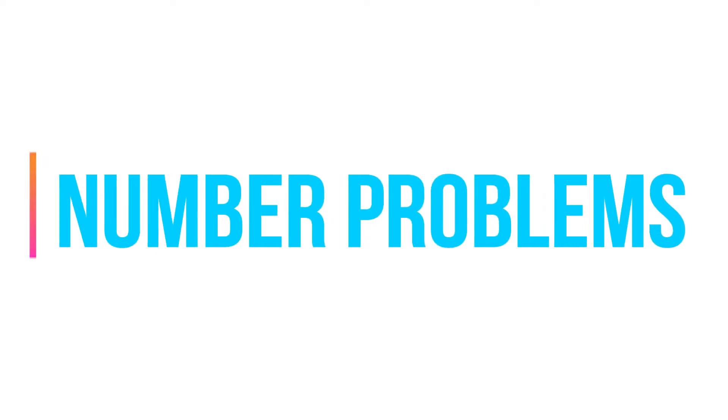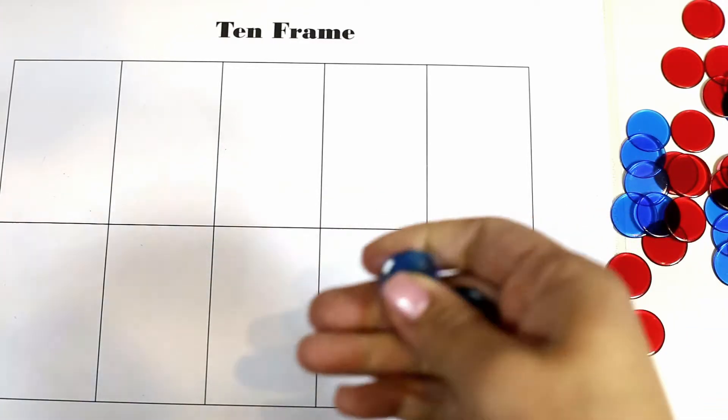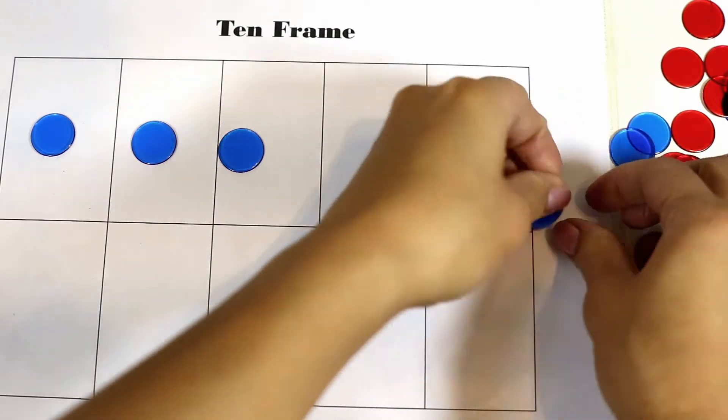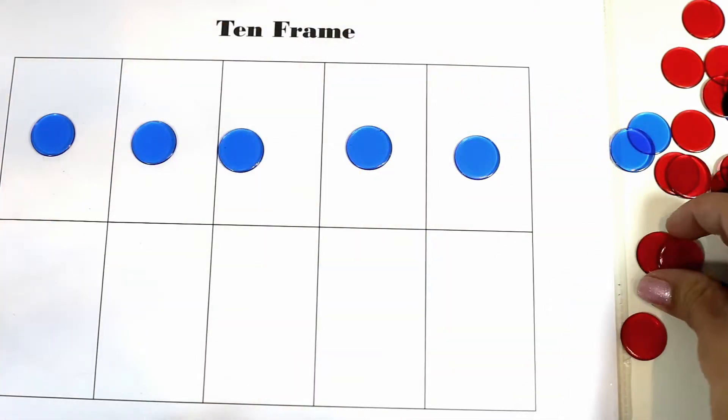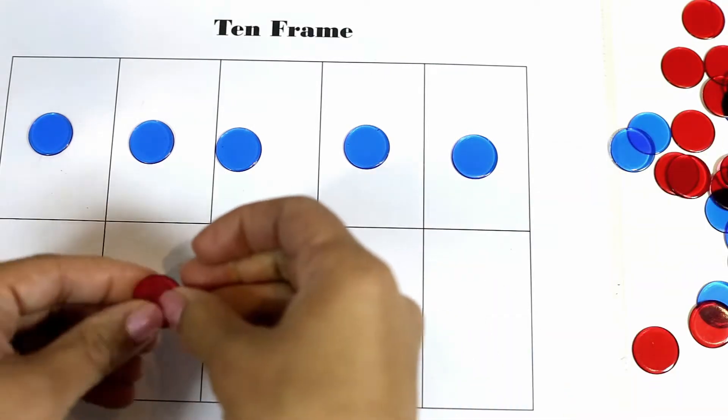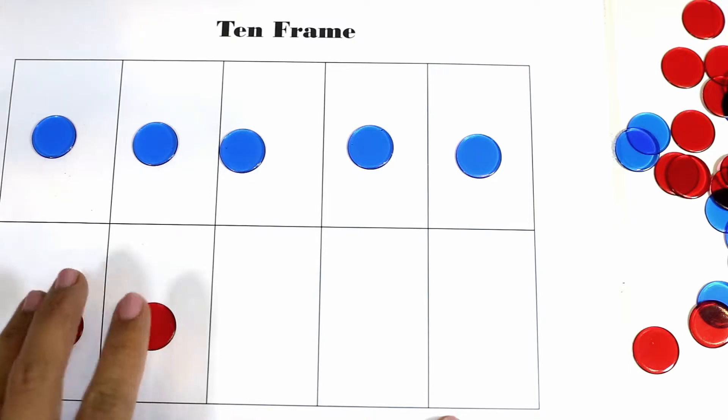The next activity is number problems. So I can give the student a number. So say I give them the number five and they put it at the top and then I would say five plus two and they would put the counters at the bottom. Five plus two is seven.